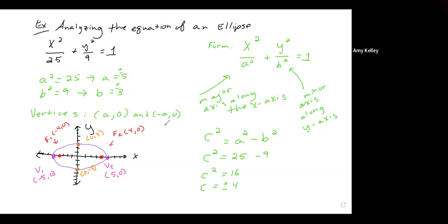So just to recap, we had an ellipse of the form x squared over a squared plus y squared over b squared equals 1. We found that a was equal to plus or minus 5, and that gives us our vertices. B gives us the points along the minor axis. So we had 0, 3 and 0, negative 3. Let's make that look more like a 3 there.